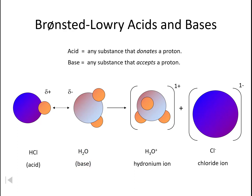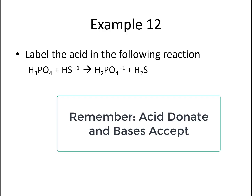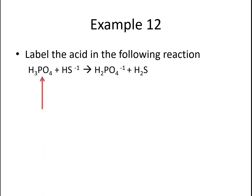Which of the four species would be the acid in the following reaction? Really I'm asking: which reactant was donating a hydrogen? The phosphoric acid donated the hydrogen — on the left it has three hydrogens, and on the right it has two, meaning it gave one away. That hydrogen went to the hydrogen sulfide ion to form hydrogen disulfide. So the base would be the hydrogen sulfide ion, because it accepted the hydrogen that the phosphoric acid gave away.